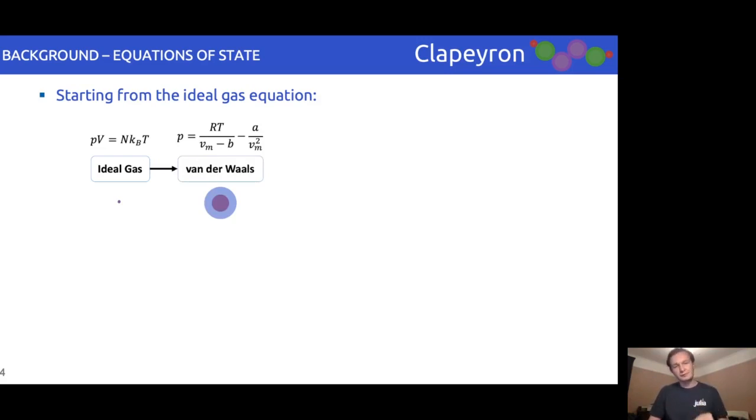Whilst this is a great improvement over the ideal gas, it still isn't particularly great for more complicated species. At this point, equations developed branch into a few categories.